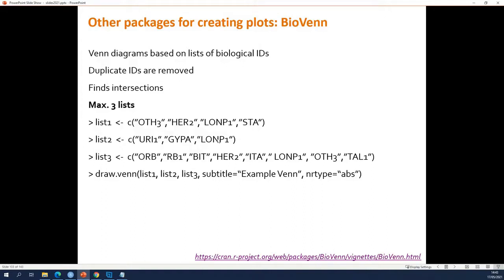It automatically removes duplicates, so if your lists contain duplicates it will throw them out and automatically find the intersections. The function you need for doing that is `draw.venn`. You give it the lists, you can give titles for the plot, and you can specify what exactly it should put on the Venn diagram — absolute numbers or percentages, for instance.